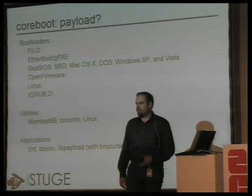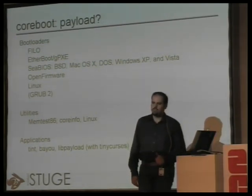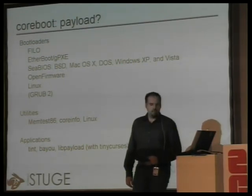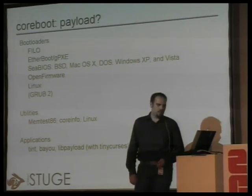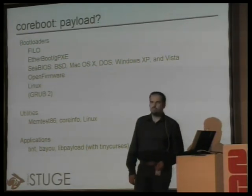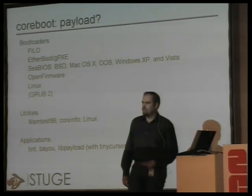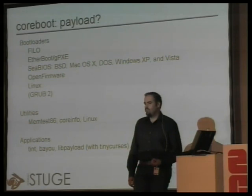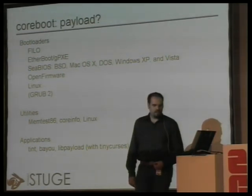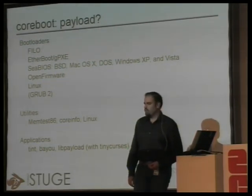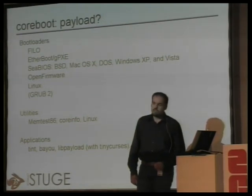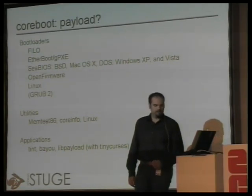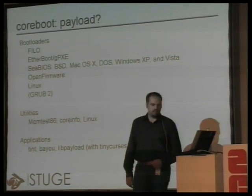Grub2 is also a bootloader. We've had some difficulties getting Coreboot support into Grub2 but it's finally getting there. But not only bootloaders — the payload could be utilities of some sort. It could be memtest86, a RAM test tool, which we developers use to see that we've really configured the machine properly. The most difficult part of initializing hardware is getting the RAM configuration correct, and memtest always shows if we've made mistakes. CoreInfo is a nice small utility with basic system information — it looks at the PCI devices, we're going to see that in the demo.